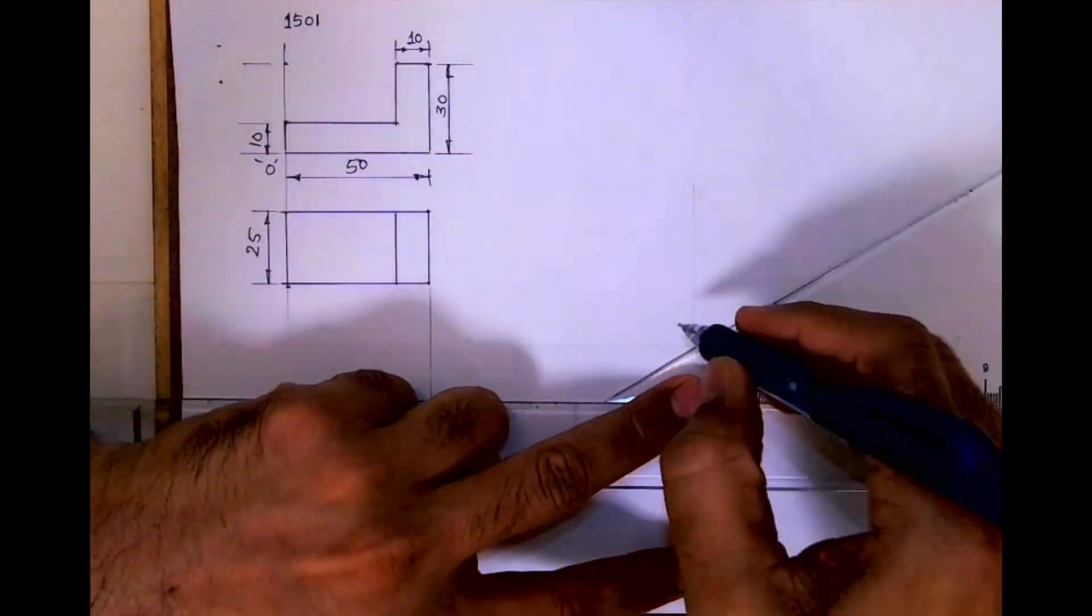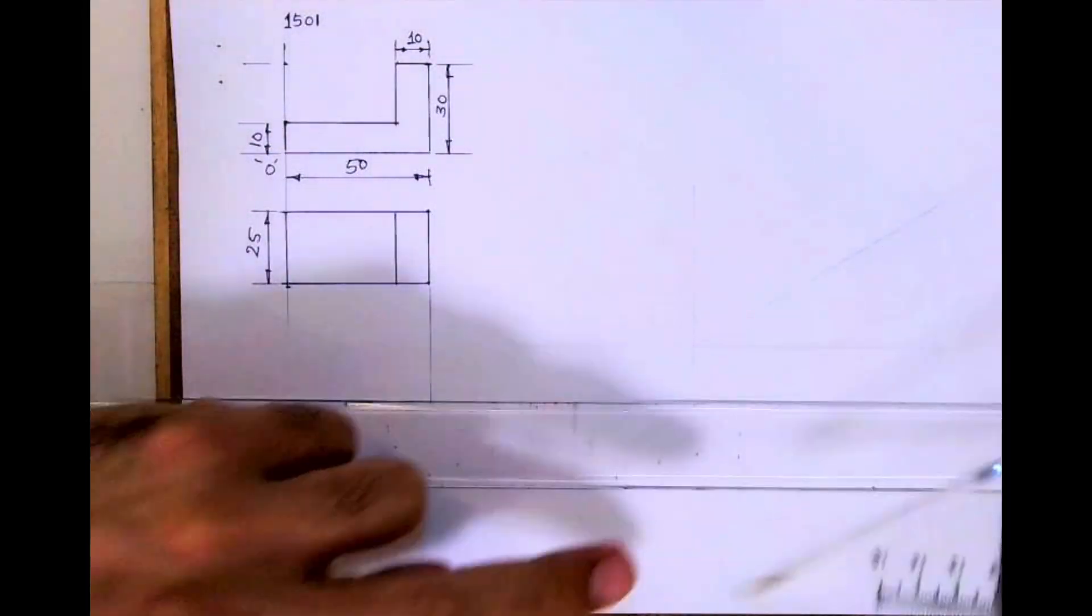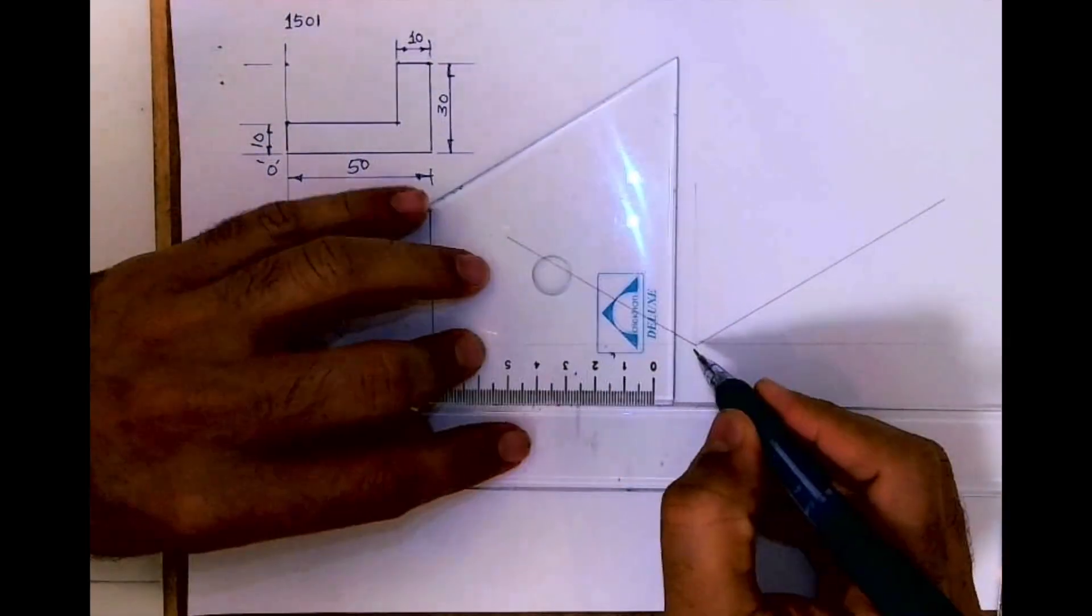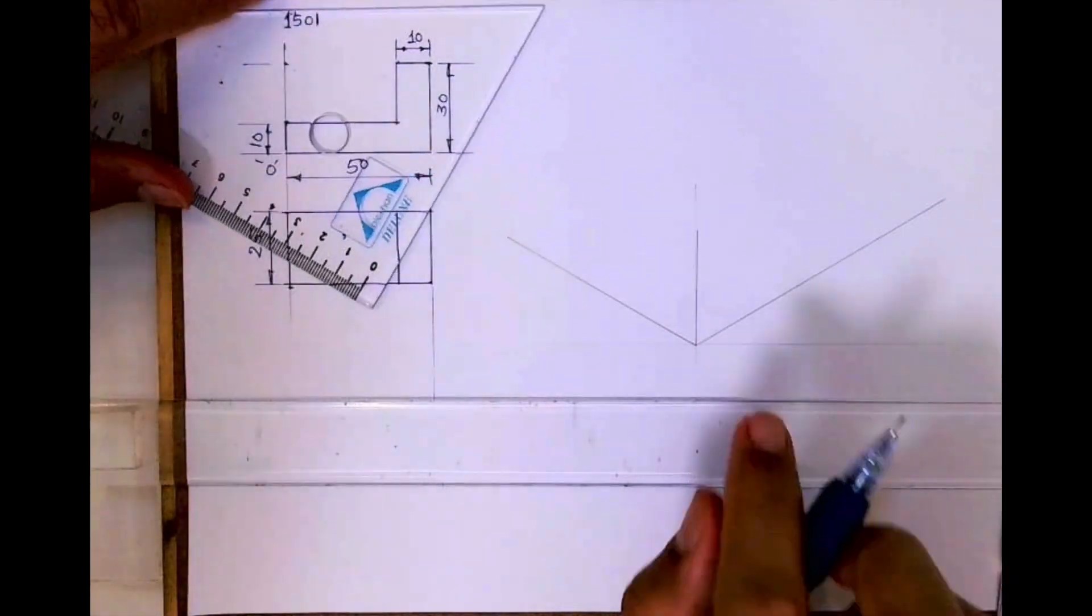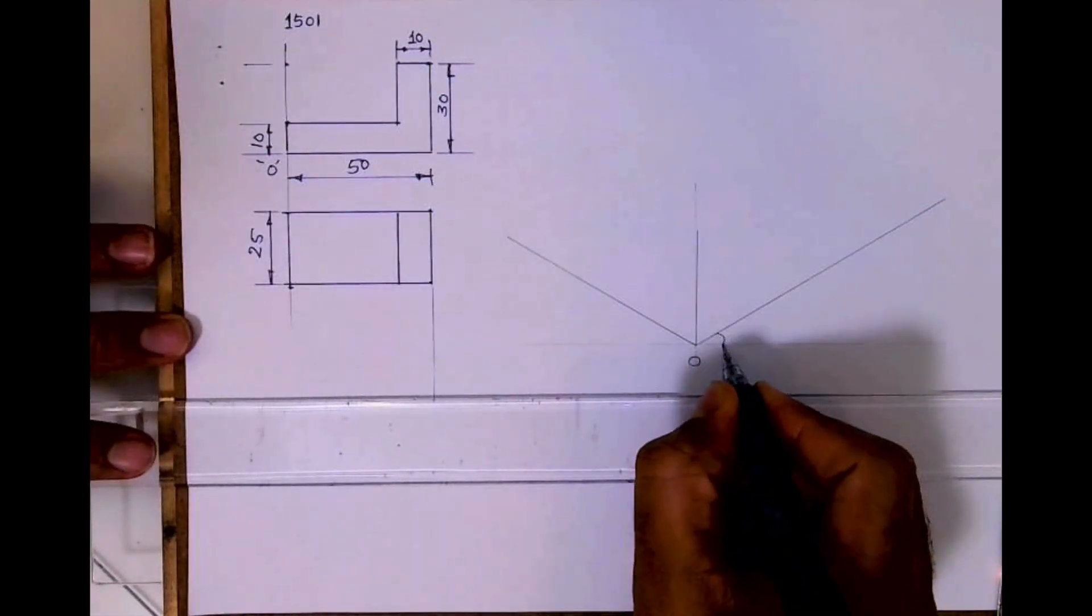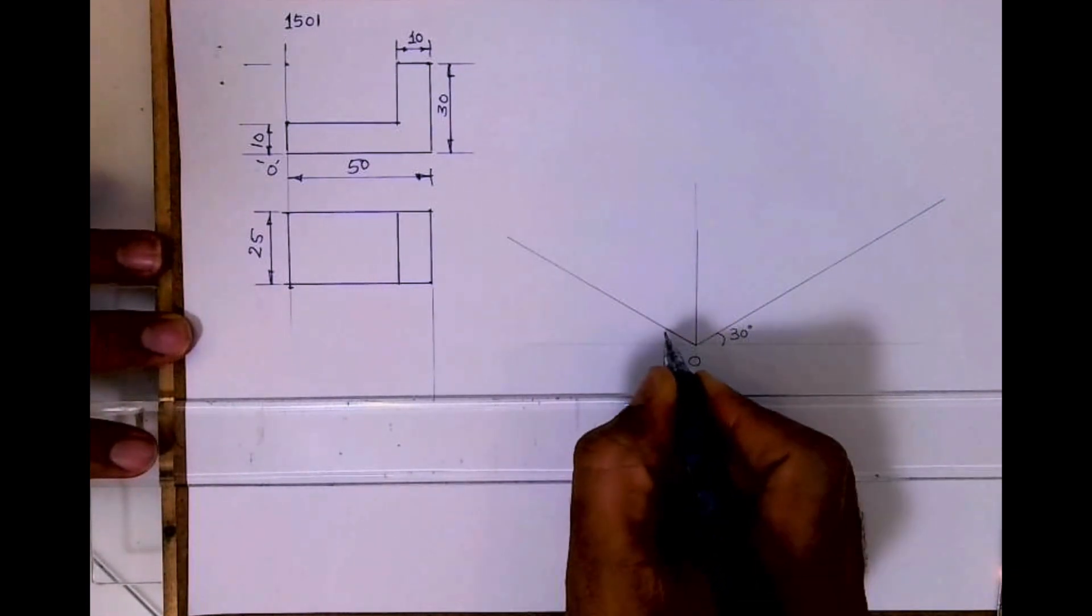First we'll start with this sum. Now we are doing isometric. First I will draw a horizontal line, then a vertical line, then 30 degrees like this. You draw 30-30 degrees and a vertical line. This is the origin, 30-30 degrees.